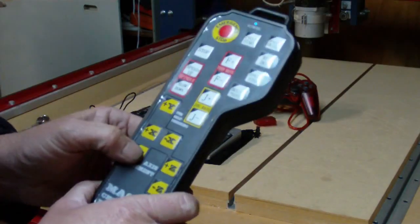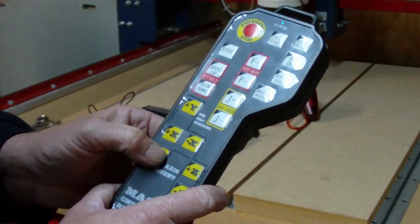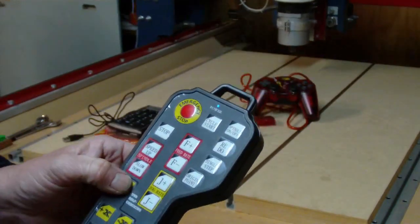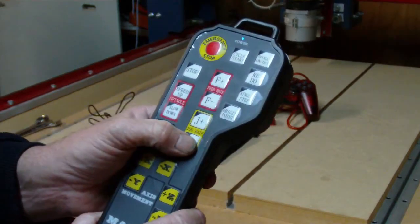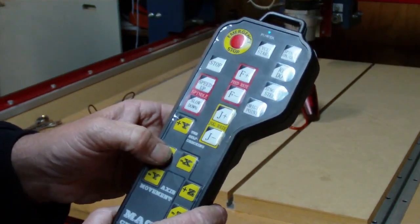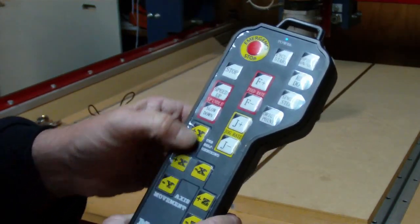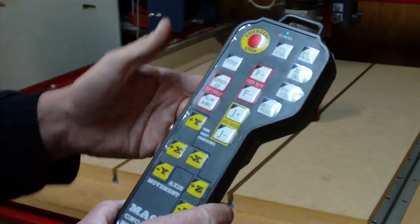So if I push jog plus, as you can see there in the background, it's now moving fast. If I push the jog minus, it's now moving slowly, which is just exactly what I want.